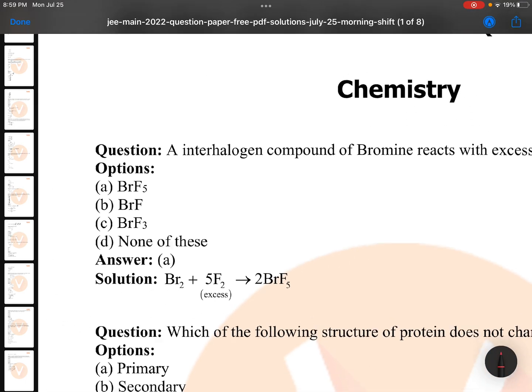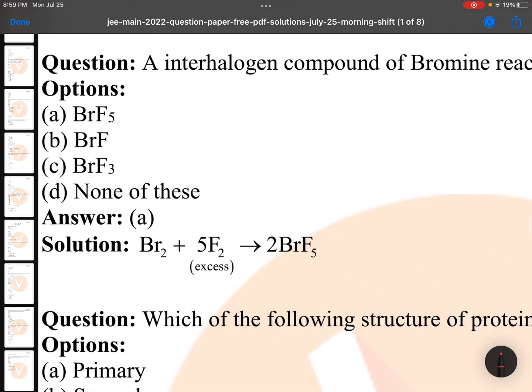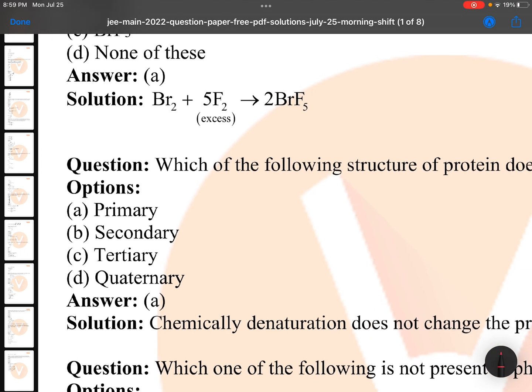An interhalogen compound of bromine reacts with excess of fluorine. Excess fluorine will give you BrF5, not BrF or BrF3. BrF7 is not formed. This is an NCERT statement as it is.